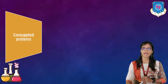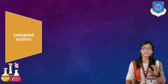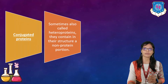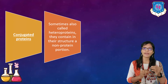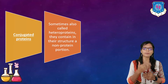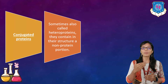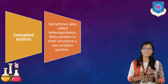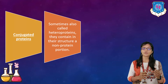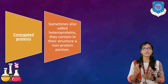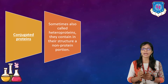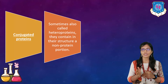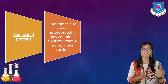The second class is conjugated proteins, sometimes also known as heteroproteins. So we can divide proteins into two types: homoproteins and heteroproteins. Homoproteins are simple proteins, while heteroproteins are complex or conjugated proteins. These proteins contain a non-protein portion in their structure — protein plus non-protein portions combine to form conjugated proteins.